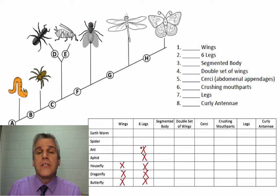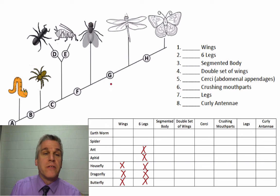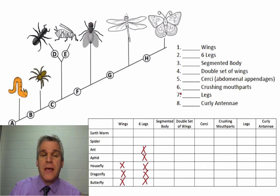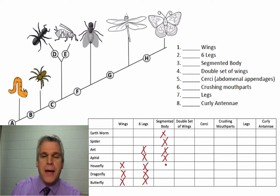Next, we will look at who has segmented bodies. Now, some of these bodies are found in two segments, some are found in three, some are found in multiple segments. And in fact, in this case, all of these organisms have a segmented body.